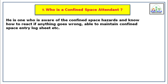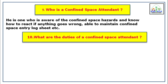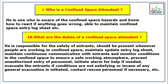Who is a confined space attendant? The confined space attendant is a third-party certified and trained person who is aware of the confined space hazards and how to react if anything goes wrong inside. They are able to maintain the confined space entry locksheet and maintain a record of emergency numbers. Their duties include: being responsible for the safety of entrants; being present whenever people are working inside; maintaining and updating the entry locksheet; maintaining continuous communication with entrants; monitoring conditions in the confined space to ensure a safe working atmosphere; preventing unauthorized entry; initiating an alarm for help if needed; evacuating entrants if conditions are not satisfactory or a general evacuation is initiated; and contacting rescue personnel.